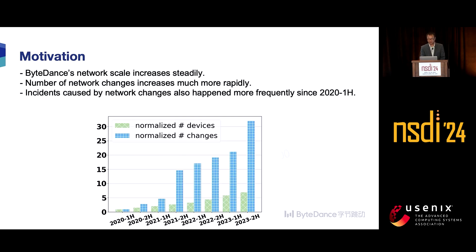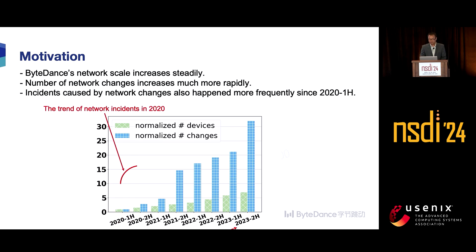Next, let's take a look at why we're doing this work. As shown in the figure, our network scale keeps increasing, and so does the maintenance of network changes. Unexpectedly, the network incidents caused by those network changes also increase dramatically. If we let the trend keep going, it could lead to more business loss and significant negative impact on our users. As a result, we must bend this curve to reduce incidents caused by network changes, which is the goal of this work.